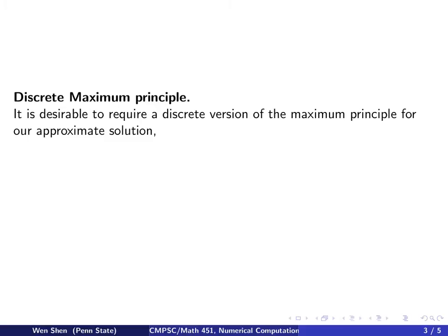We try to preserve the same things. That is, the maximum is non-increasing. So we can write it in the following way. Now we have discrete data and discrete time step. So the maximum over all J,